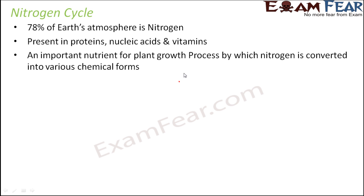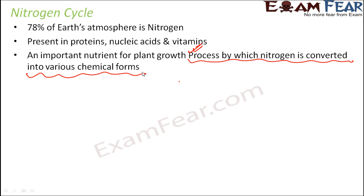The nitrogen cycle is a process by which atmospheric nitrogen is converted into various chemical forms. You might have a question: 78% of the atmosphere is nitrogen, so there is so much nitrogen available, and it is needed by plants, animals, and all life forms — so can't it be directly utilized?